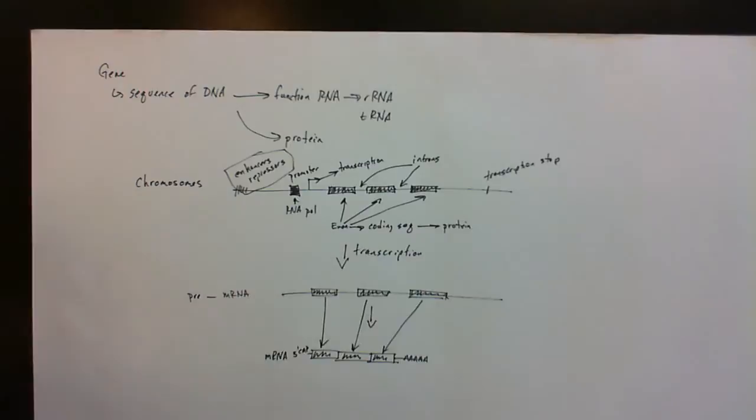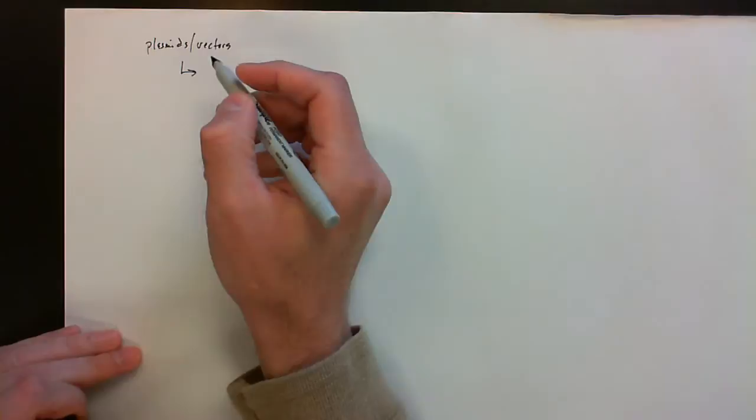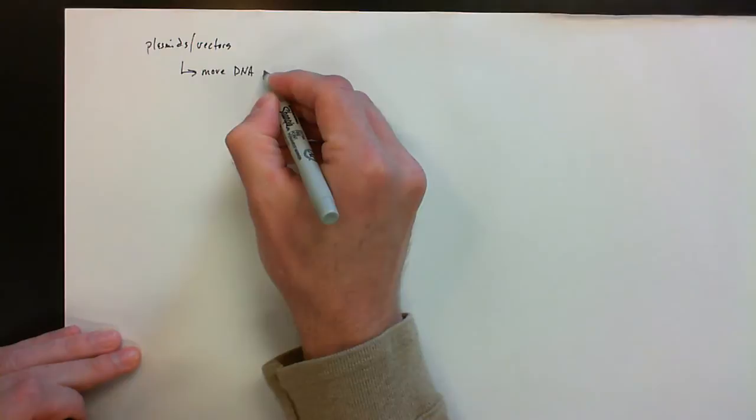In this video, I want to talk about plasmids or vectors that we see in a molecular biology lab. Essentially, how we use these in the lab is these are going to allow us to move DNA around. So if we've got a particular piece of DNA that we are interested in, we can then move it using a plasmid.